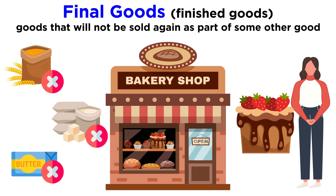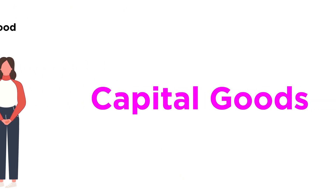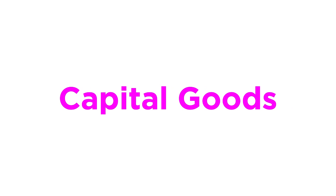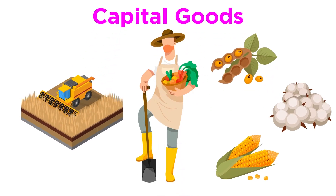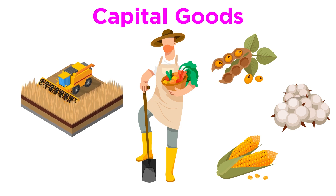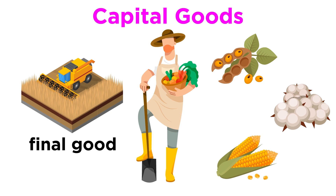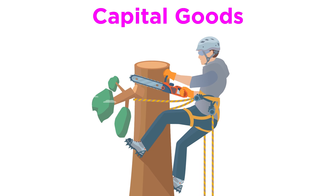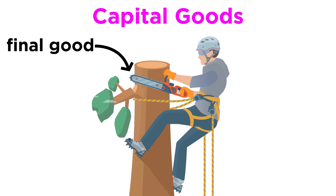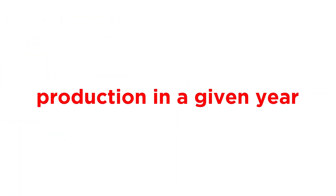There are also goods that are used to make other goods but are still considered final goods. These are called capital goods. For example, if a farmer buys a combine to harvest his crops, the combine is considered a final good, even though it is used to produce other goods, because it won't be sold again as part of another good. There are also capital goods used to provide services counted as final goods — for example, if a landscaper buys a chainsaw in order to take down trees, the chainsaw is considered a final good.